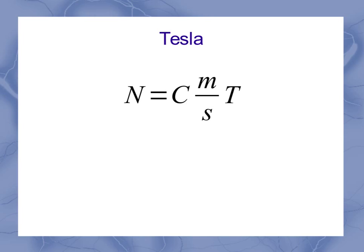I can rearrange this equation to solve for Tesla. And I would get that I've got a Newton divided by Coulomb meter per second. Now doing just a little bit of algebra, because having a fraction on the bottom of a fraction is sort of awkward, we could rearrange this to see that a Tesla must be equal to a Newton times a second divided by a Coulomb meter.